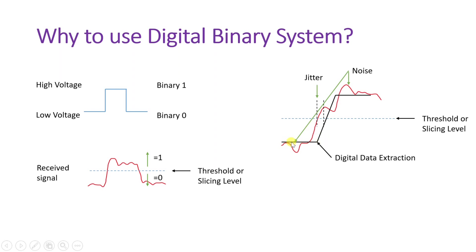We can see this signal has binary 0, and as it rises it becomes 1. Even though jitter is there, we can extract information. We can eliminate jitter by having a proper clock. Most importantly, we can remove noise — and that is not possible in analog transmission. Analog audio transmission cannot be transmitted without noise, while in a digital system we can eliminate noise. That is why we use the digital binary system.